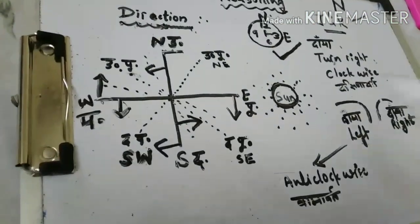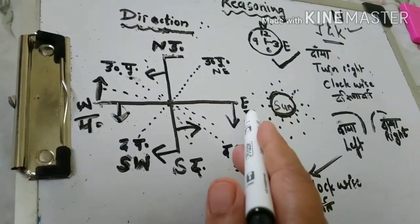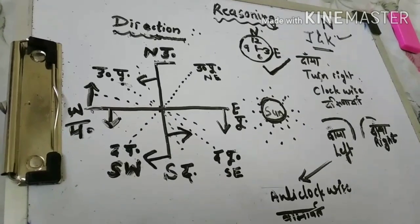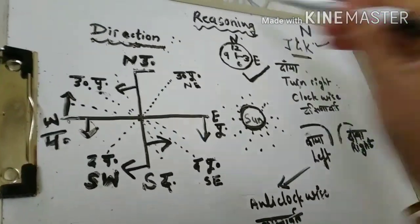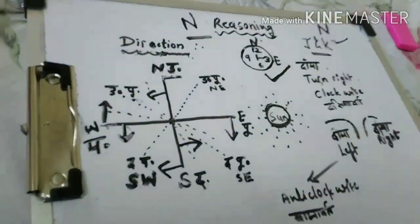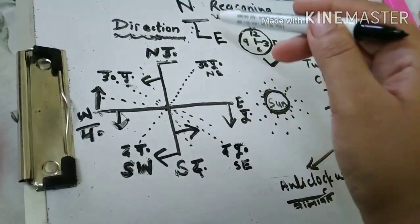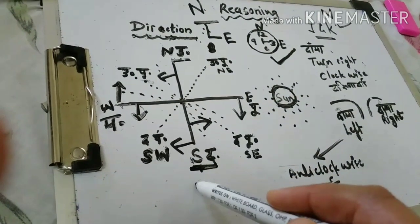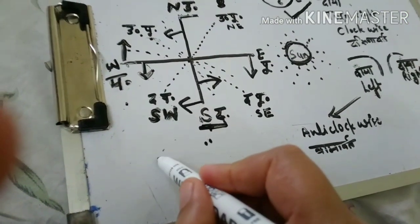One more thing - when you start solving sums, on your paper or copy, we always mark north at the top, then 90 degrees to the right is east. The opposite of north is always south - I have written it here also. The opposite of north is south, and the opposite of east is west.